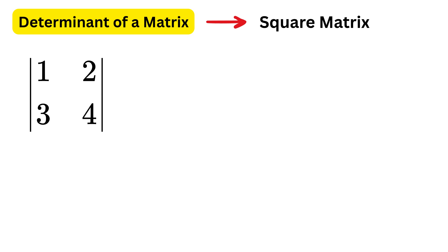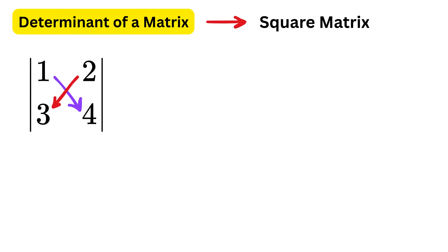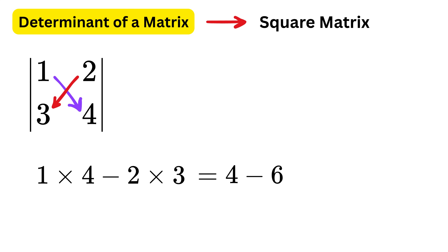Let us first look at the 2x2 case, which is the simplest one. For example, if the matrix is this, then the determinant is calculated by multiplying the diagonals in a cross pattern. We do 1 times 4 minus 2 times 3, which is 4 minus 6, and the final answer is minus 2.